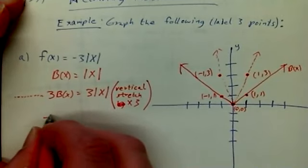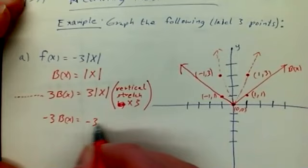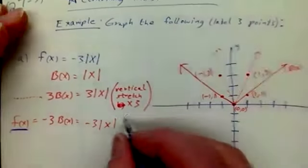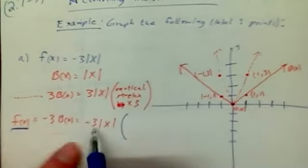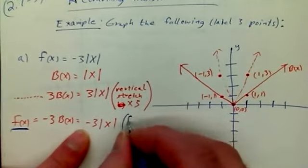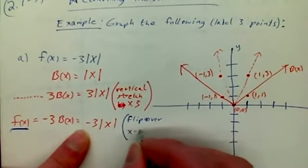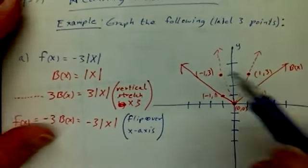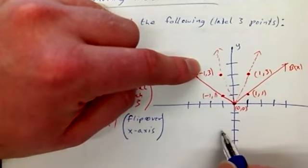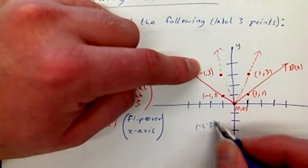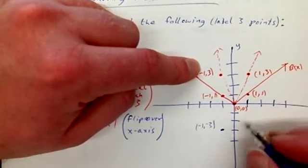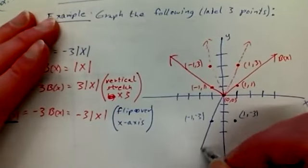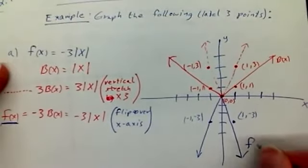Now I still have a negative there. So if I do negative 3 times b of x, that'll be negative 3 absolute value x. That's what I want. That's equal to this f of x, which I am going to do in blue. And what does that do from the last one? If you remember, if the negative is in front of the whole function, the whole previous function, that's going to flip over the x-axis. It takes all the y's and makes them negatives of what they just were. So 0, 0 remains unaffected. But negative 1, 3, we're going to flip the y value. This is negative 1, negative 3. See how I'm just literally changing the y values? 1, 3 is going to change to 1, negative 3.